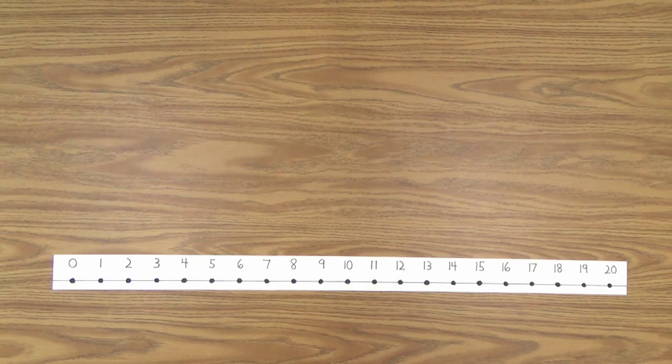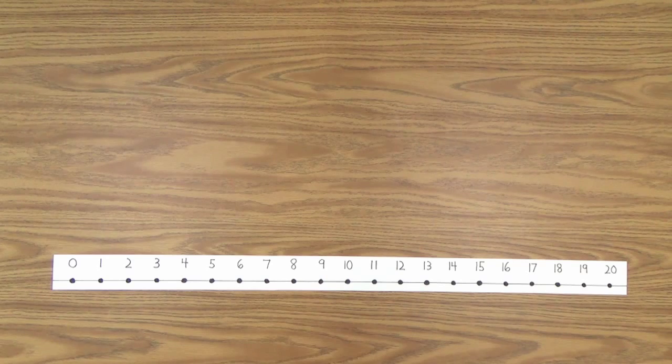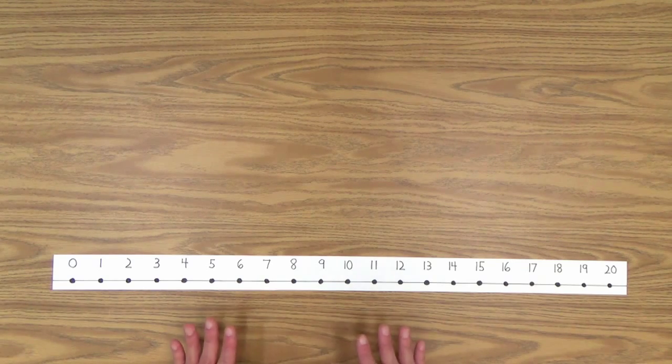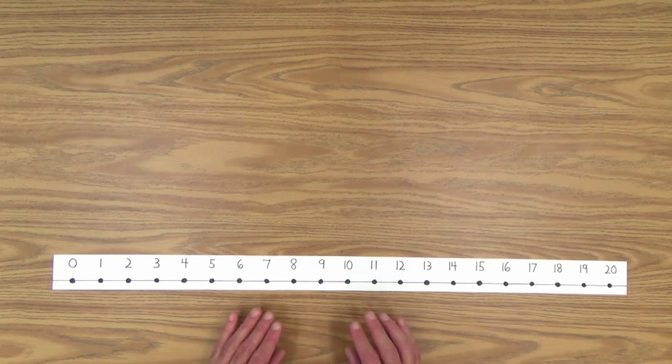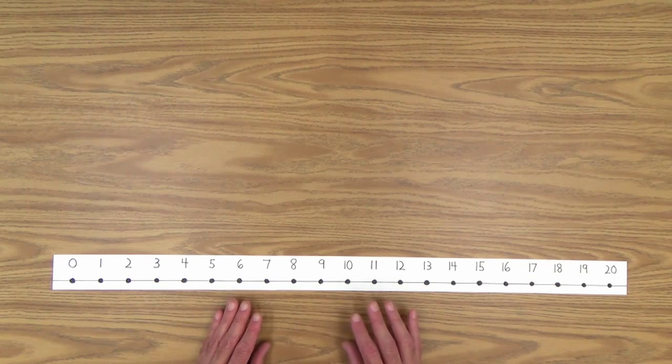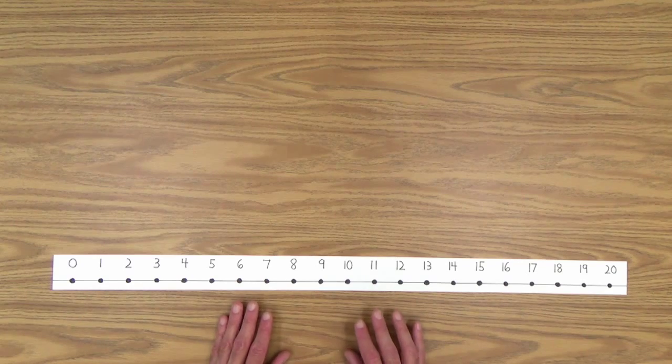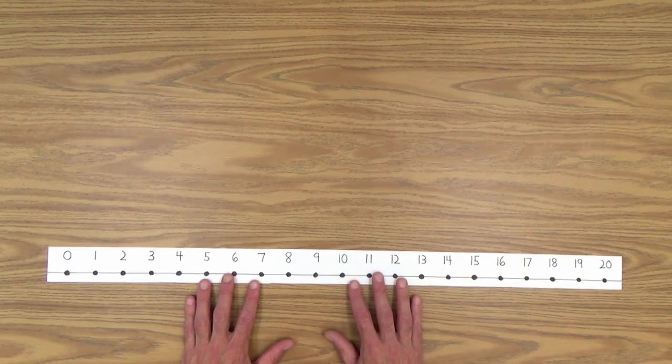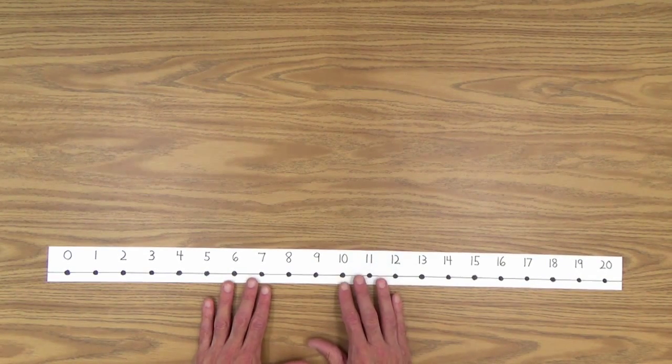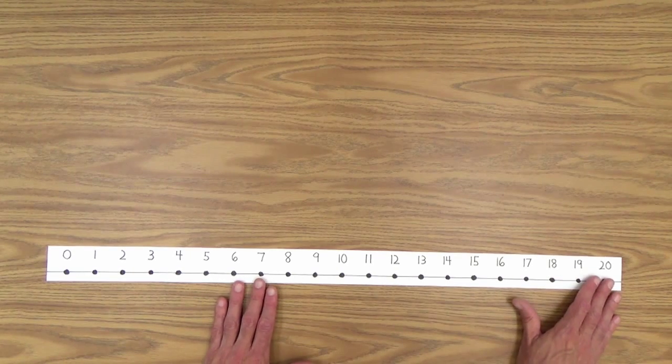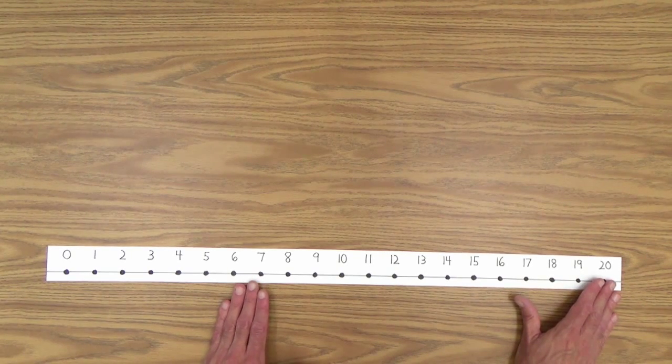So once again, you want to remind your child about just what the number line is. And if you need to review that, you can go back to the last lesson and tell her now that instead of going up to 10, this number line goes twice as far, all the way up to the number 20.